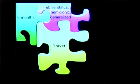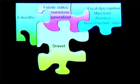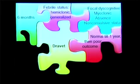Over the next six to twelve months, they represent with further episodes of febrile status epilepticus, and then between one and four years other seizure types emerge, most commonly focal discognitive seizures, but also myoclonic and absence seizures and episodes of non-convulsive status epilepticus.